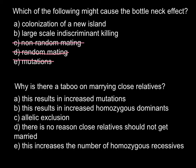That leaves only answers B and A. Answer A is colonization of a new island, and this causes the founder effect. So we are only left with answer B: large-scale indiscriminate killing causes the bottleneck effect. Some natural disasters may also cause the bottleneck effect when fewer representatives of the population are left and genetic variability is greatly reduced, just like in a bottleneck. So the correct answer is answer B.